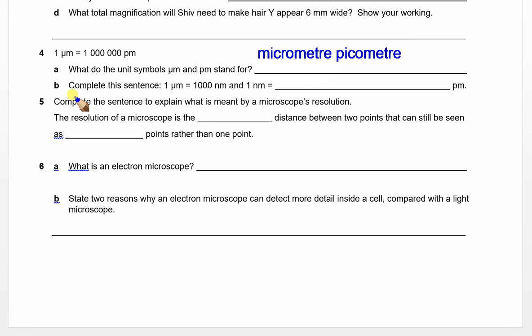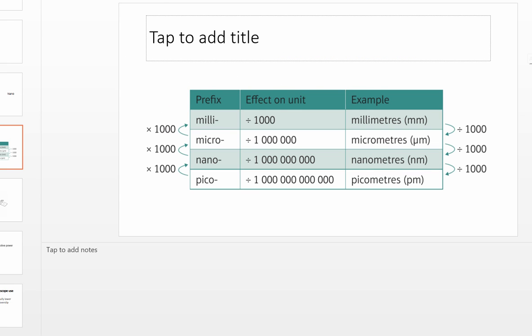We're looking at completing this sentence: 1 micrometer equals 1000 NM—that's nanometers—and 1 nanometer equals 1000 picometers. In class I gave you this table, and this is something you need to remember. You need to remember what these prefixes mean. Always refer to that table to look at what we need to do when we look at those units.